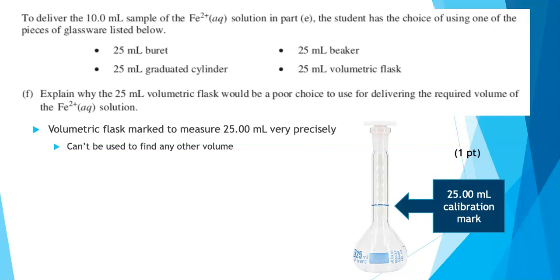So it can't really be used to find any other volume. You would need something else. The buret or the graduated cylinder would be my choice. The question just asks you why the volumetric flask isn't a good choice. But if you want it to be a measurement to a tenth of a mil, you need something marked to at least one mil.